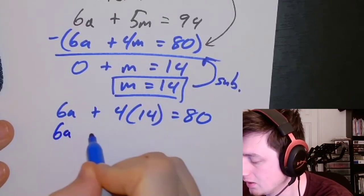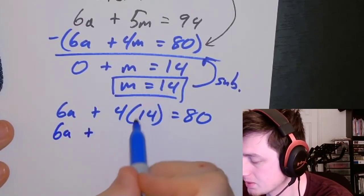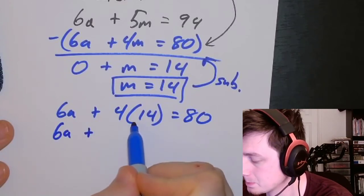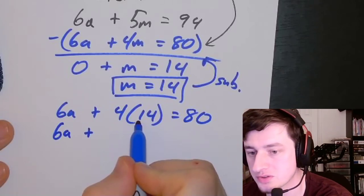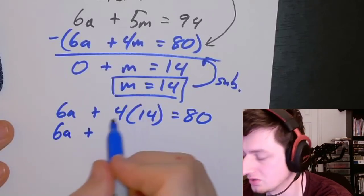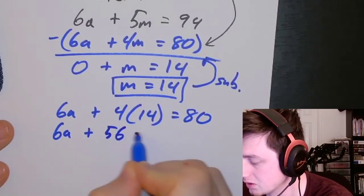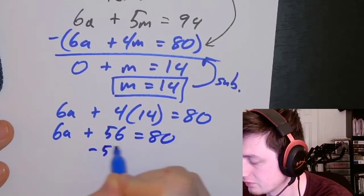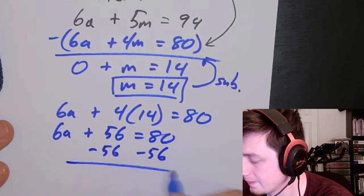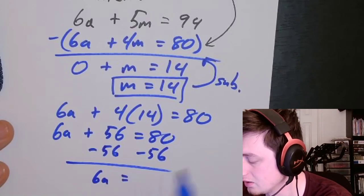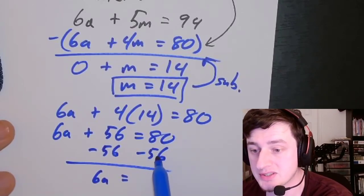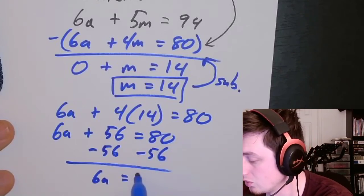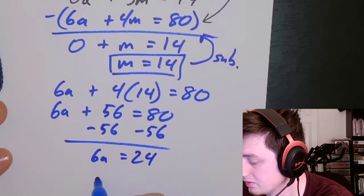We get 6A plus 56 equals 80. 4 times 14 gives us 56. Subtract 56, and we're left with 6A equals 24. 80 minus 56 is 24. So that means A is $4.